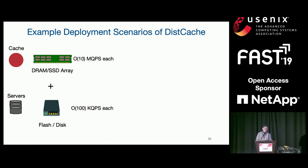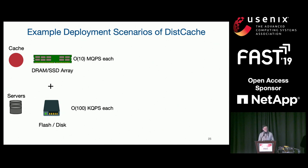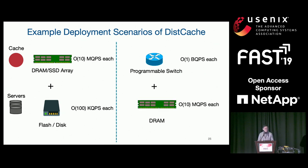Let's look at example deployment scenarios for disk cache. First, the cache nodes can use DRAM or SSD arrays, while the backend servers use flash memory or disk as backend storage. Another example: the cache nodes can use emerging programmable switches, which give you on the order of billions of queries per second per switch, and the backend storage servers can be in-memory stores like memcached or Redis.